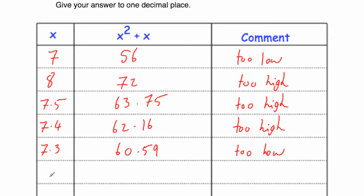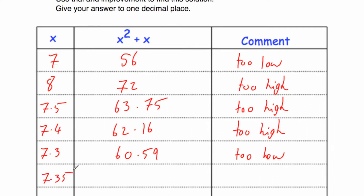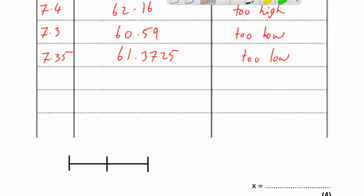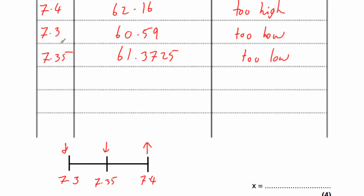To find out which one, we do the checker — the midpoint of 7.3 and 7.4, which is 7.35. So 7.35 squared plus 7.35 equals 61.3725, so that's too low. We know that 7.3 is too low, 7.4 is too high, and the midpoint 7.35 is too low. So the answer is somewhere between 7.35 and 7.4, meaning it's closer to 7.4. So the answer is 7.4 to one decimal place.